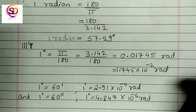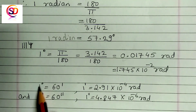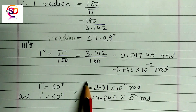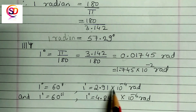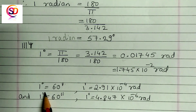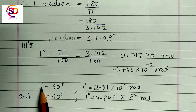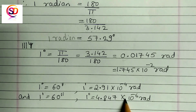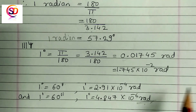Some important conversion points to remember: 1 degree equals 60 minutes. 1 minute equals 2.91 times 10 raised to minus 4 radian. 1 minute equals 60 seconds. 1 second equals 4.847 times 10 raised to minus 6 radian. These conversion values must be remembered.